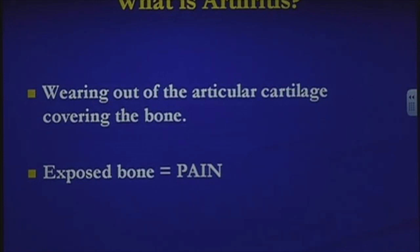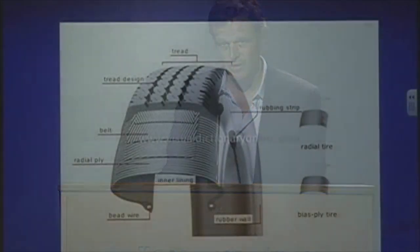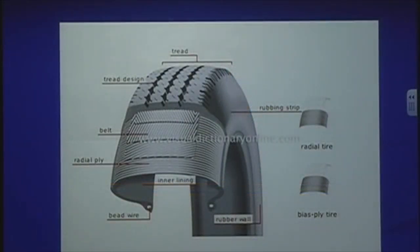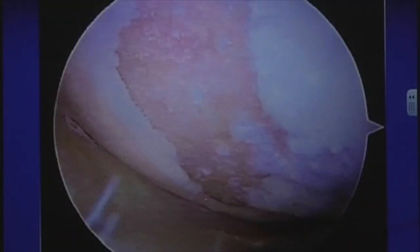Arthritis is basically the wearing out of the articular cartilage that covers the bone. Once the bone is exposed, this causes pain. I always explain this to patients using the analogy of a tire: the articular cartilage is like the rubber, and the bone is like the steel belt beneath it. When the rubber wears out and bone is exposed, you have a flat tire.